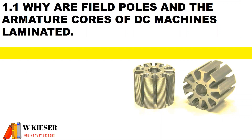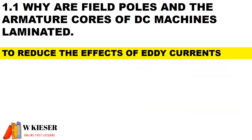Why are field poles and the armature cores of DC machines laminated? They are laminated to reduce the effects of eddy currents.